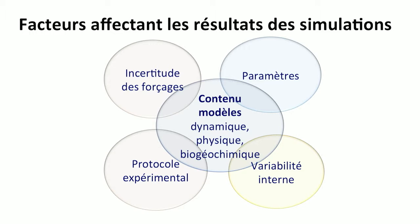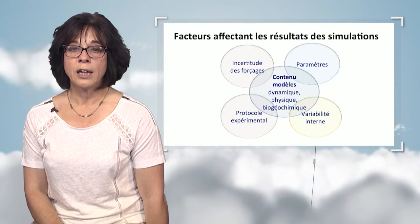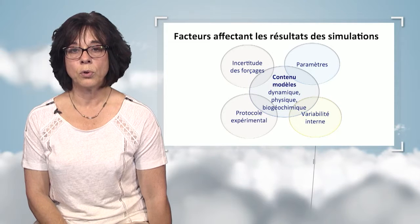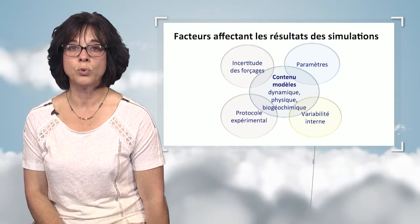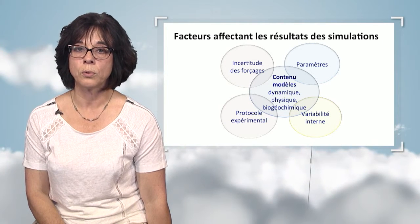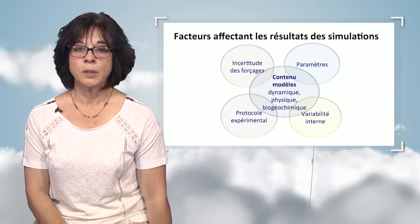A simulation also means that some limitations must be imposed and external forcing elements. There are uncertainties, and these uncertainties may impact the final result. The protocol and the way that forcing is imposed on the simulation may change from one model to the next and have an impact on the result. An intrinsic phenomenon to climate is variability, and depending on how we use variability, it introduces noise and does not make comparison easier. It must be considered in the comparison between models.